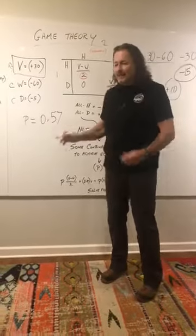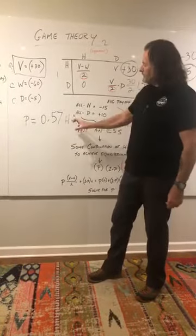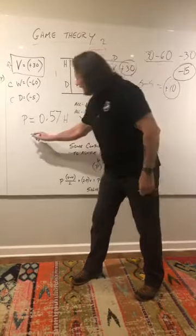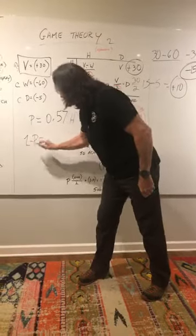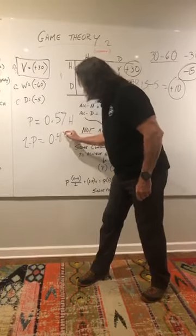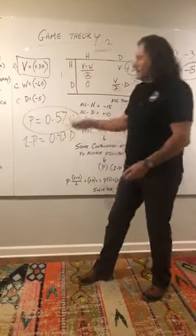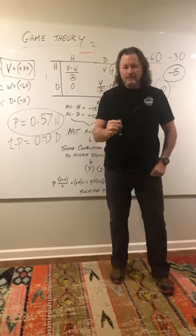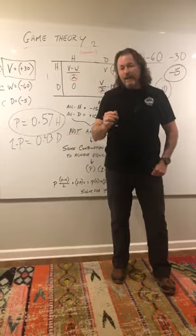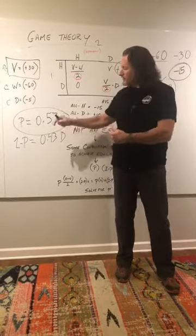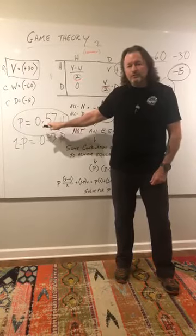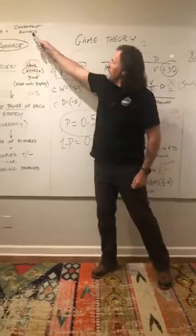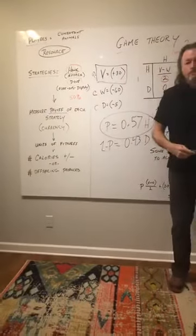In other words, it was 57% of the time the animals would employ what's called the hawk strategy for their optimal fitness. And the other times, one minus P equaled zero point four three, 0.43. And that was for the dove. There you have it. In other words, to achieve optimal fitness, it behooved the animal to employ the hawk strategy 57 out of 100 times whenever he encountered another opponent for a valuable resource.